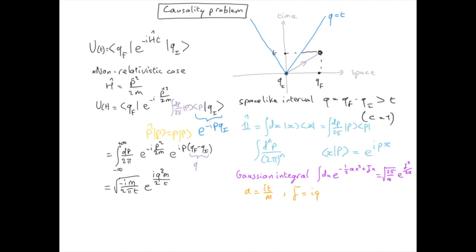Clearly it is not zero, meaning that we have a causality problem. But that's not surprising because we started in a non-relativistic framework of quantum mechanics. So what happens now when we go to relativistic treatment starting with a relativistic expression for the Hamiltonian?